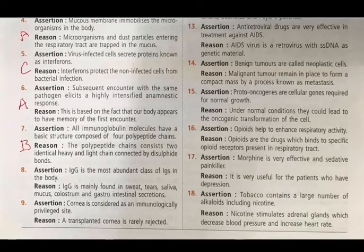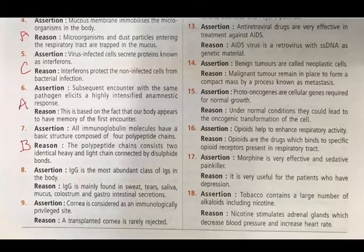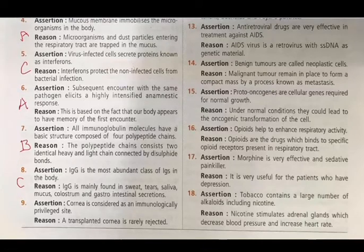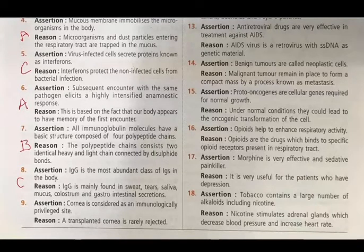Question 8 - Assertion: IgG (immunoglobulin G) is the most abundant class of immunoglobulins in the body. Reason: IgG is mainly found in sweat, tears, saliva, mucus, colostrum, and gastrointestinal secretions. IgG constitutes approximately 80% of total Igs and is found in blood, lymph, and intestine. It is IgA that is found in the listed secretions. Answer: C.